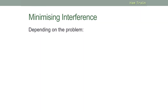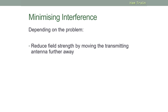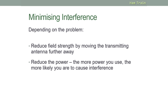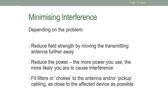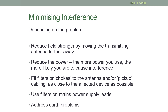So how can we minimize interference? Well, it depends on the exact problem. One of the best ways of reducing interference is to reduce the field strength by moving the transmitting antenna further away from the thing you're interfering with. Also, reducing the power – the more power you use, the more likely you are to cause interference, and over a wider range. You can also fit filters or chokes to the antenna, or to the thing that's picking up the interference. You need to fit filters or chokes as close to the affected device as possible. If the interference is coming through the home mains system, you can also add a filter to the mains power supply leads. You can also address earth problems, which we'll discuss later in this module.